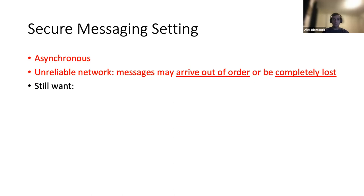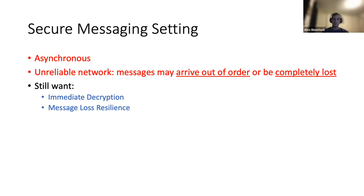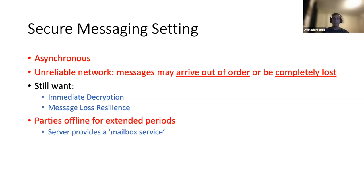And despite this, we still want immediate decryption, meaning that even if a message is completely out of order, the receiver should be able to immediately decrypt it and place it in the correct spot in the conversation transcript, and also message loss resilience, meaning that if one message is completely lost forever, that shouldn't doom the protocol. Also parties may be offline for extended periods of time — like if somebody is on an airplane — so there should be a server that provides a mailbox service for messages so that when a party does come online, it can download these messages from the server.